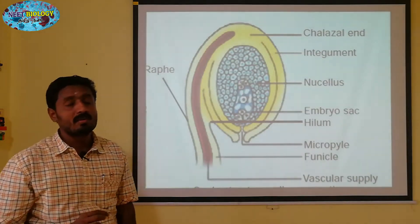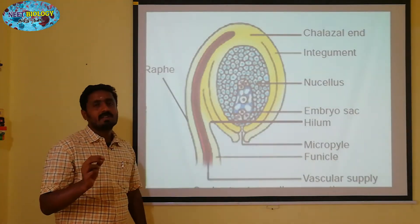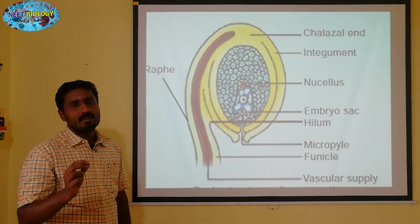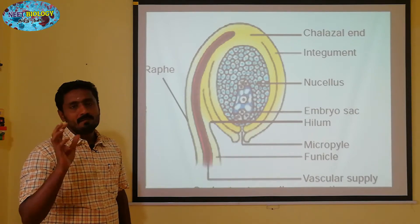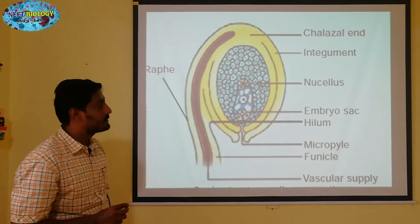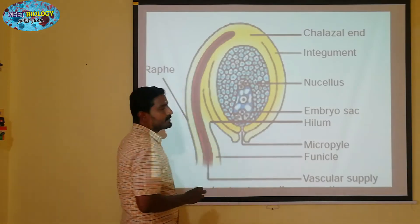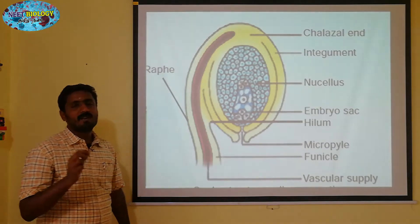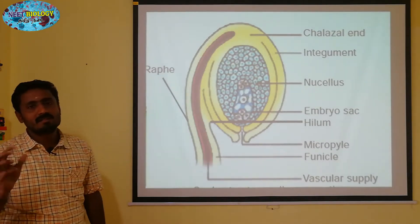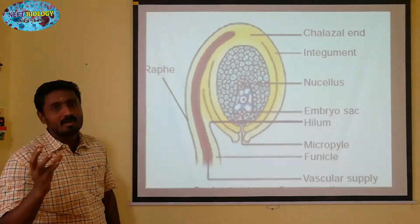One male gamete fuses with the secondary nuclei — this is a triploid. The endosperm is formed. The other undergoes syngamy to form a zygote, which develops into the embryo.